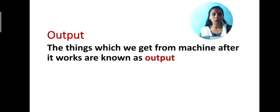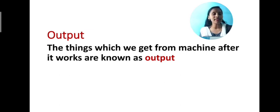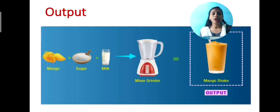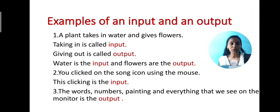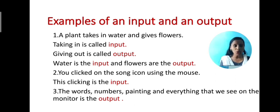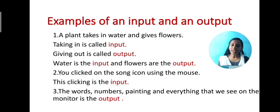Now, what is output? The things which we get from a machine after it works are known as output. What is the output of the above example? The mango shake. A plant takes in water and gives flowers. Water is the input and flowers are the output.